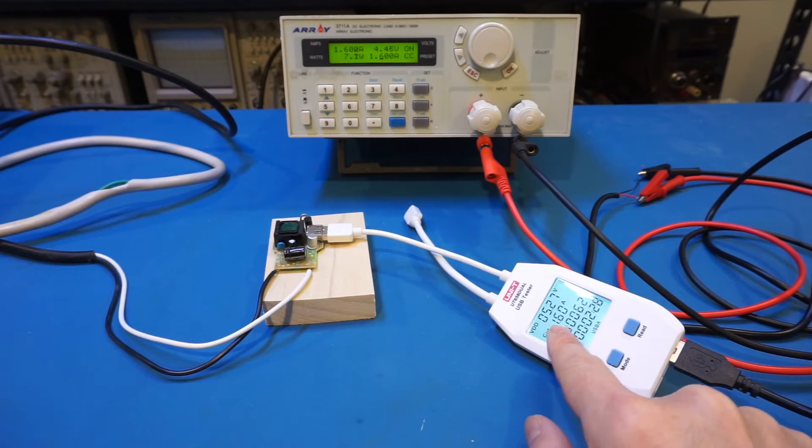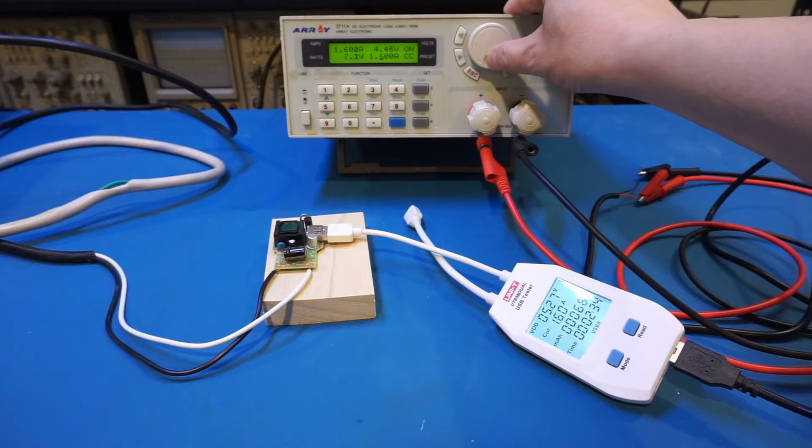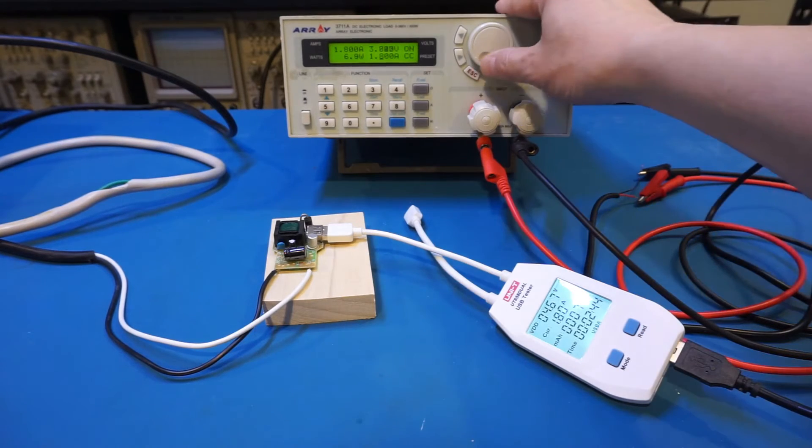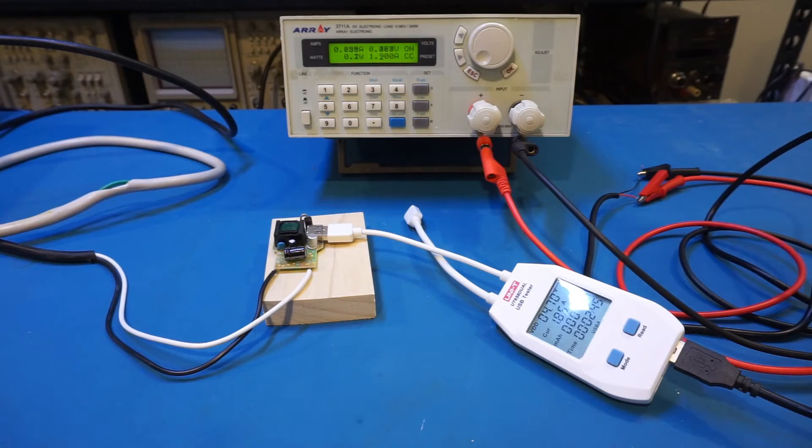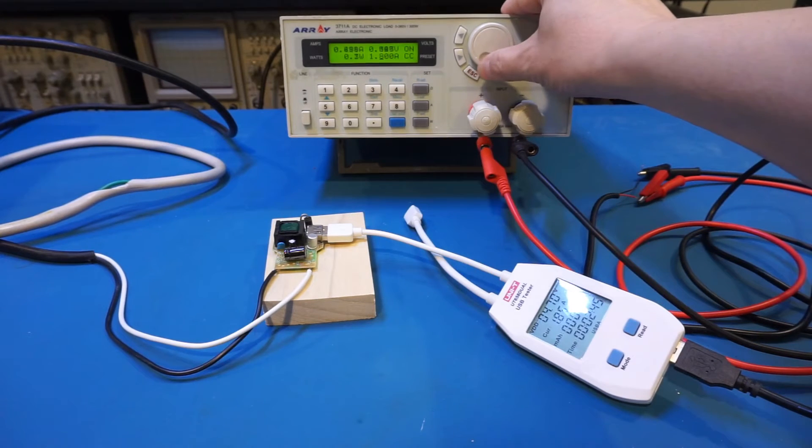Right now, you can see we're outputting 1.6 amps. The output voltage is at 5.27 volts, so that's okay. But let me try to increase the output. Right now, 1.7 amps. 1.8. You can see we're already dropping to 4.7 volts. 1.9. And basically, the unit cut off. As you can see, we don't have an output voltage anymore. So basically, the maximum current you can draw really is just around 1.8 amps.